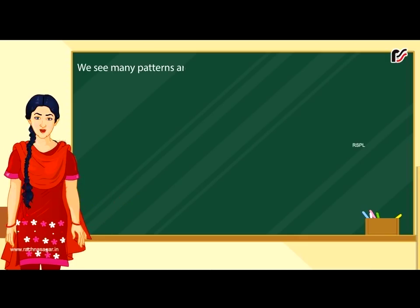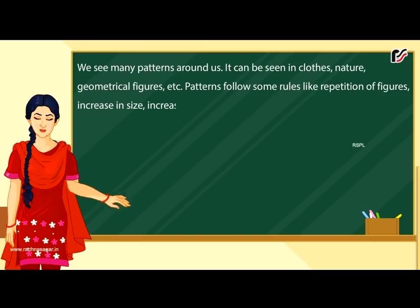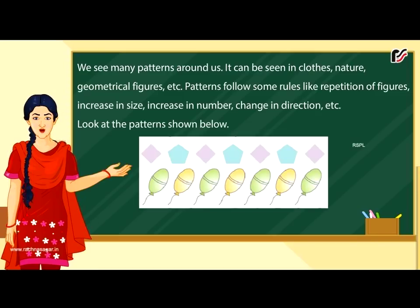Patterns: We see many patterns around us. It can be seen in clothes, nature, geometrical figures, etc. Patterns follow some rules like repetition of figures, increase in size, increase in number, change in direction, etc. Look at the patterns shown below.